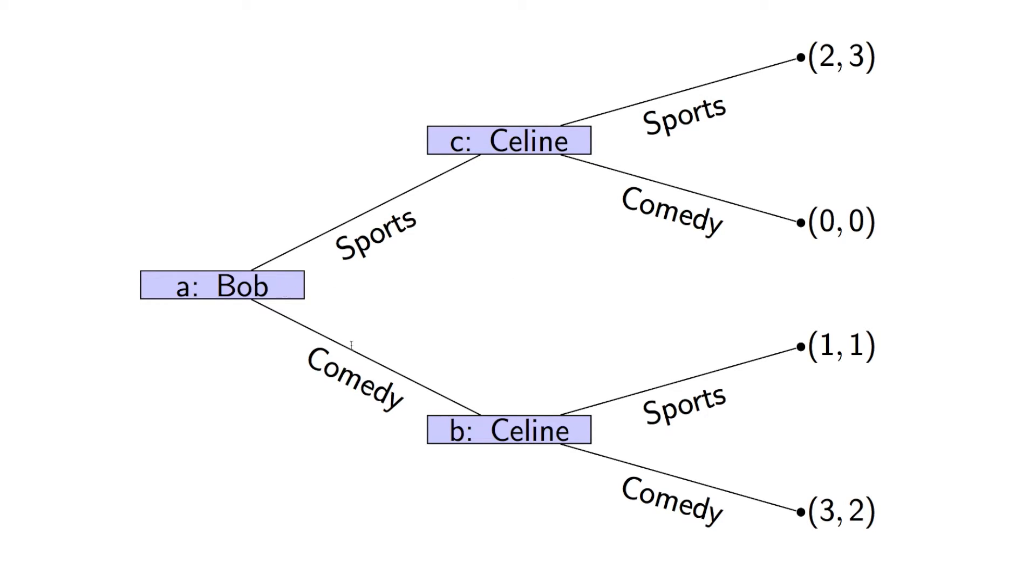In other words, Selene doesn't know whether or not Bob has chosen comedy or sports. And then on the leaves of the trees, we have the utilities.